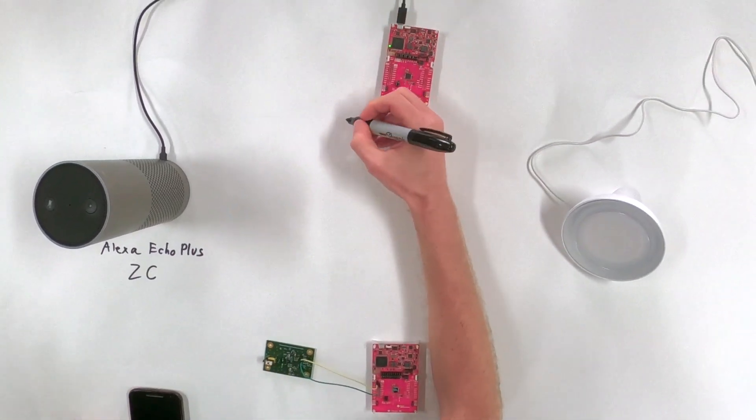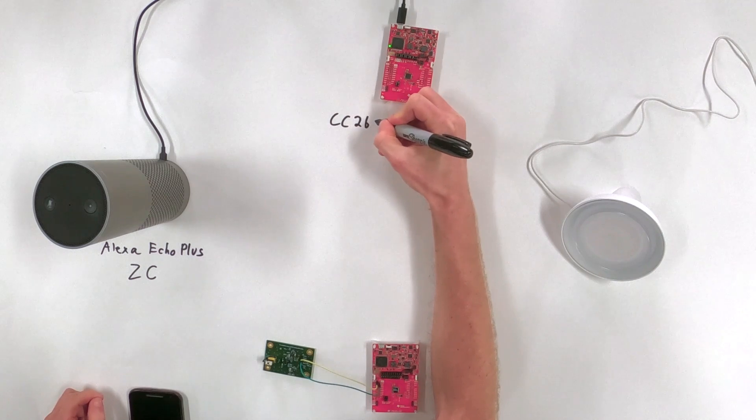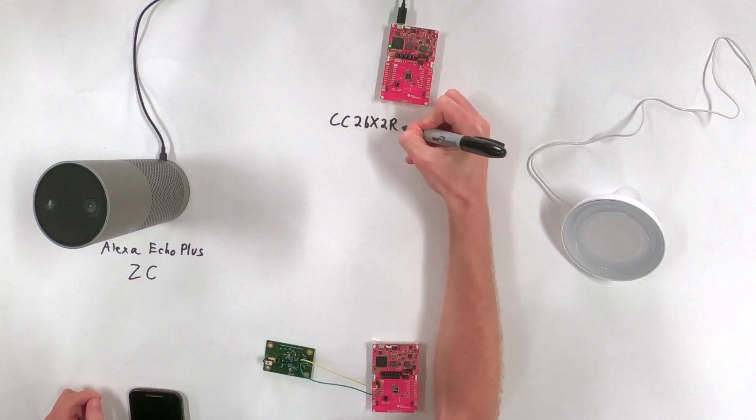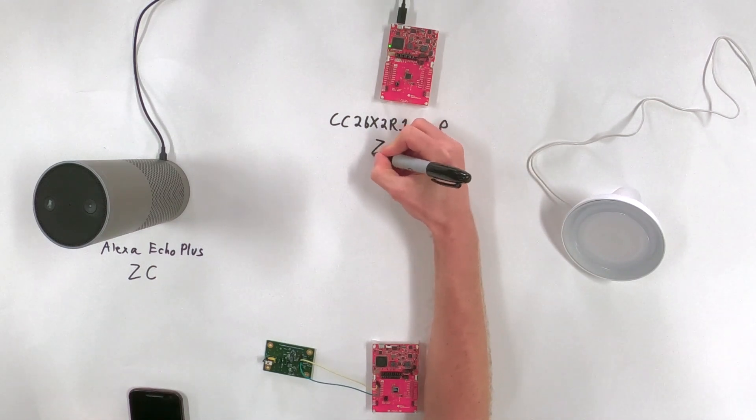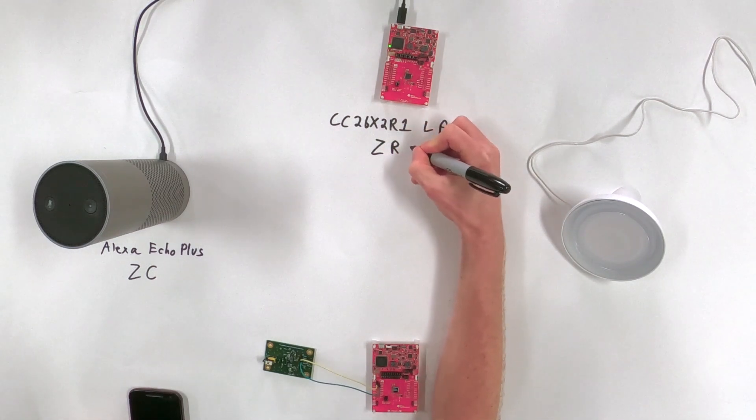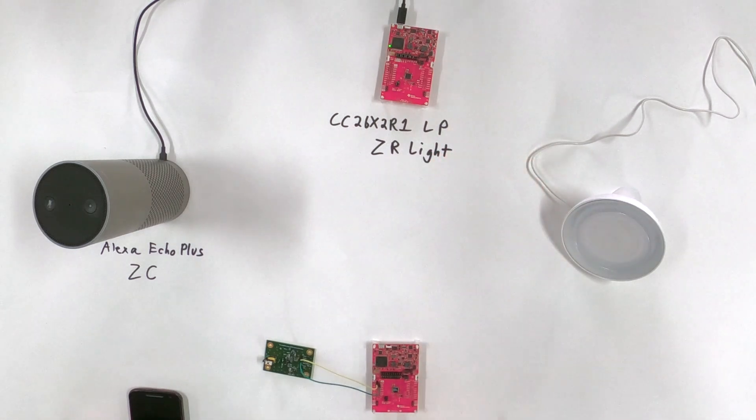Which I'm sure many of you are familiar with, probably have them in your own homes. Yeah, and so this is going to act as our Zigbee coordinator. I'm just going to write ZC for short. Sure. To the top here, we have a CC26X2R1 launch pad and that's going to be acting as a Zigbee router, but specifically it's going to be performing in function as a light. Okay.